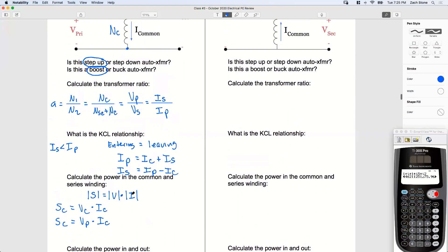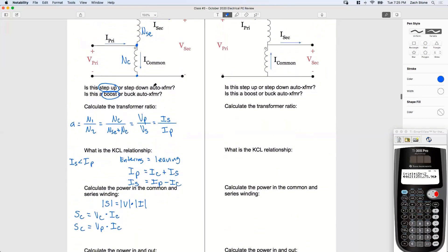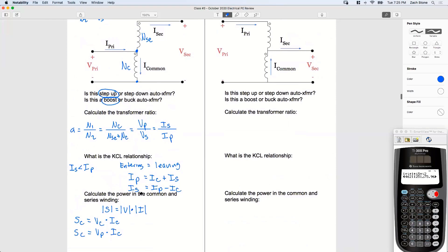All right, how do we find the power in the series winding? Let's zoom out just a little bit so we can see everything. Great. So here, now I want to find S series. We're just going to use a subscript V series and I series, and then we'll go from there. What's the voltage across my series winding from this point to this point in the middle? What's the voltage from here to here?